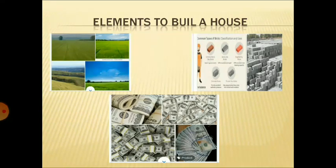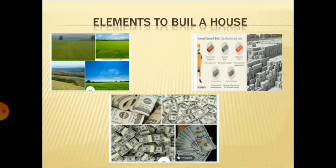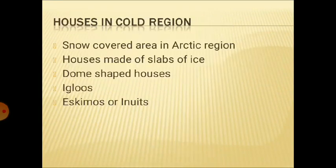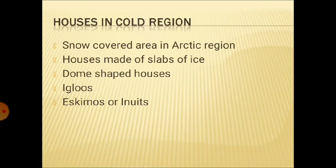You can see the picture on the screen. Hope you are enjoying the presentation and getting the concept too. Now there are different types of houses. Different types of houses are built in different places and regions. Let's discuss houses in cold regions first. The cold region of the Arctic is completely covered with snow throughout the year.